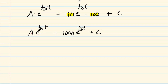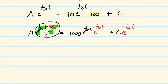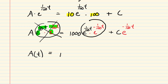We're very close to solving for A(T). We multiply every term by e^(-t/100). On the left side, e^(t/100) times e^(-t/100) gives e^0, which is 1, leaving just A. On the right side, similarly, 1,000 times e^0 is 1,000, and we have plus the constant C times e^(-t/100). We are almost done — we just need to determine the constant of integration using an initial condition.